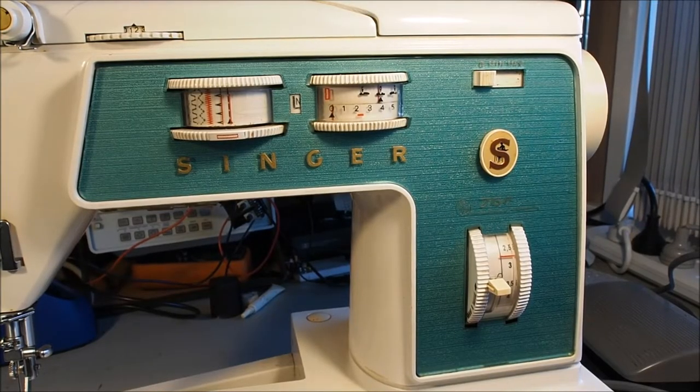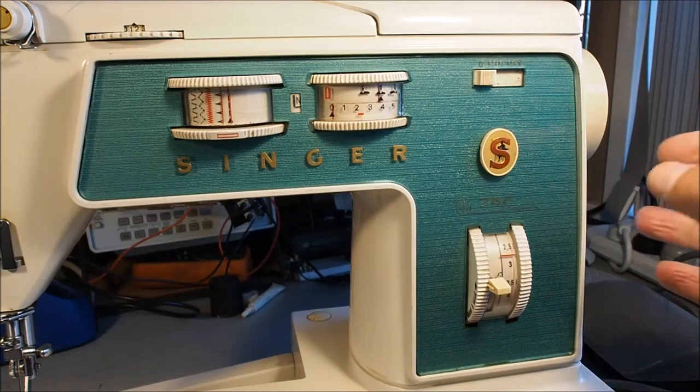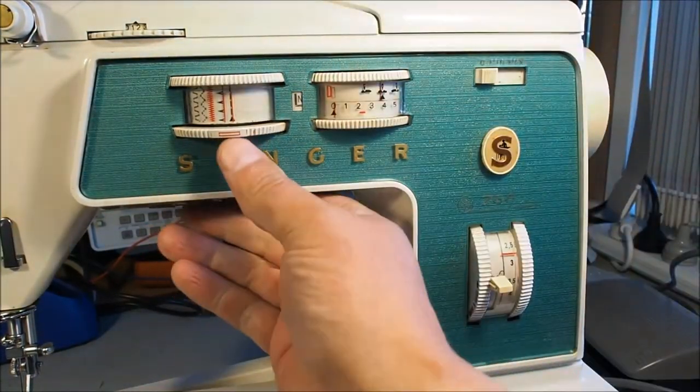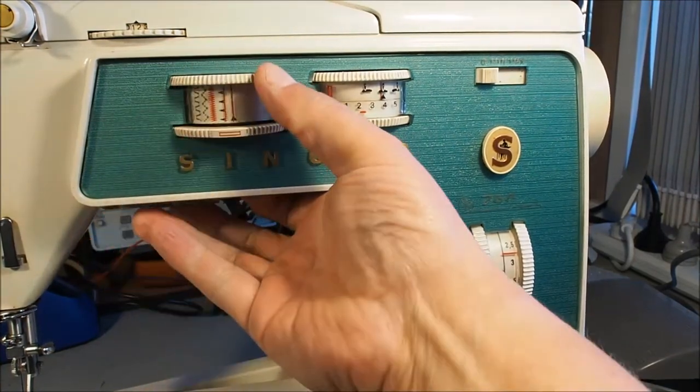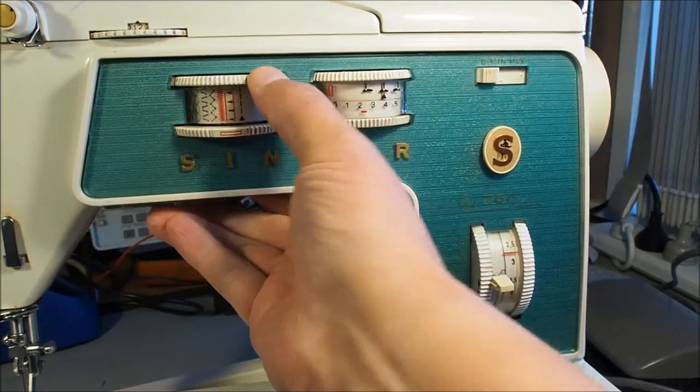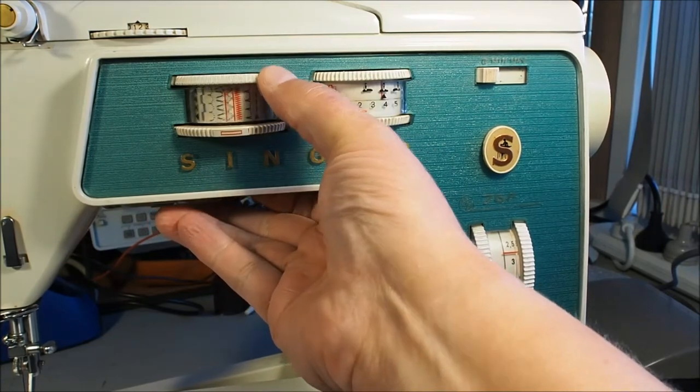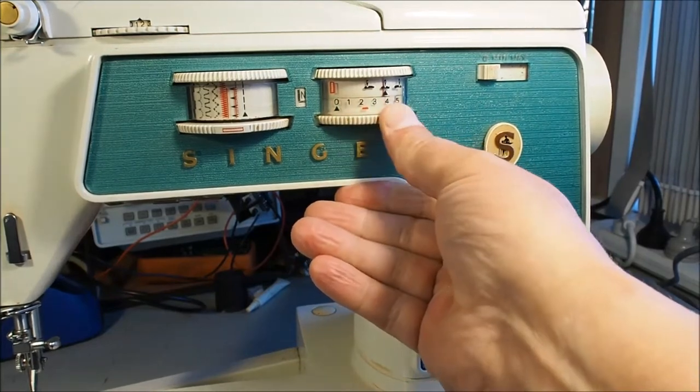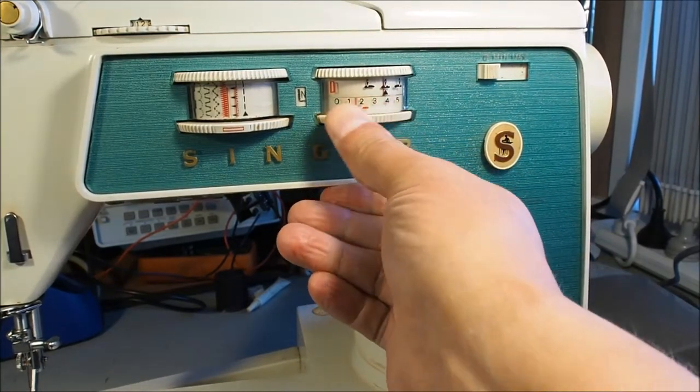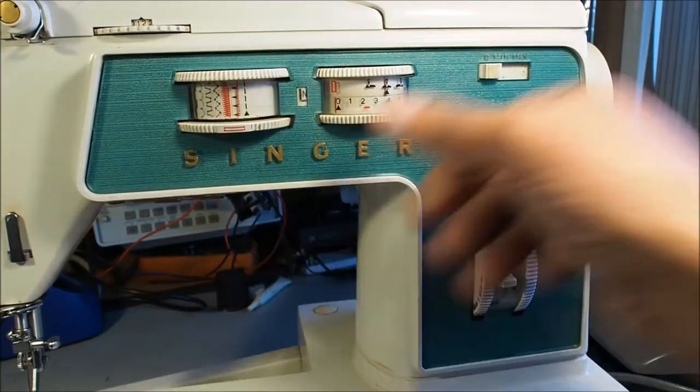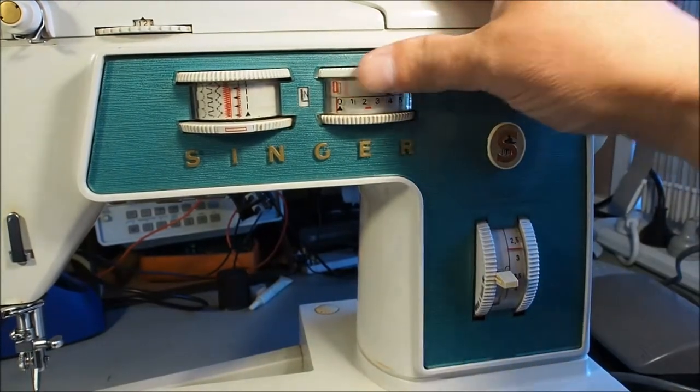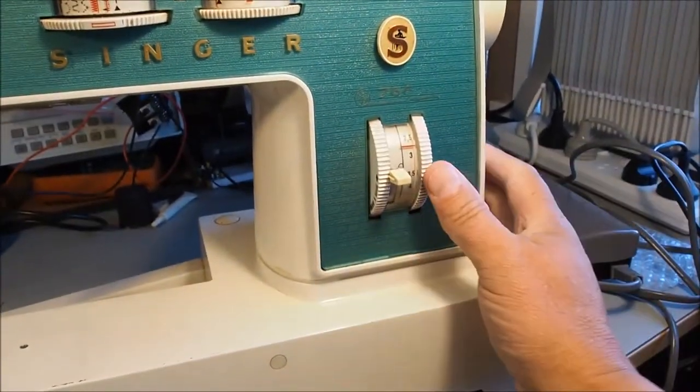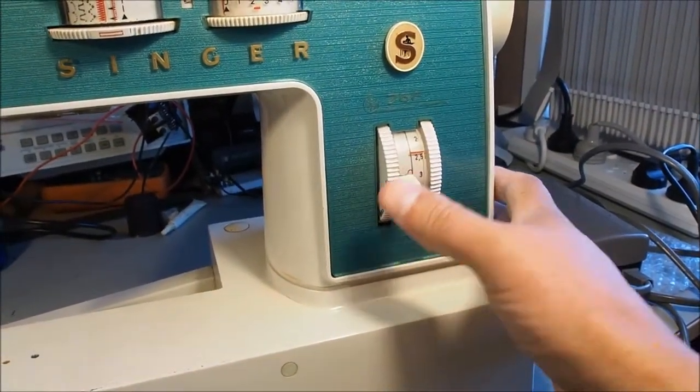Another feature is what Singer trademarked as Touch and Sew, which is these dials here. For selecting your pattern stitches, push that in to rotate and select. You've got your zigzag width, needle positioning, buttonhole selection, and down here your stitch length and reverse.